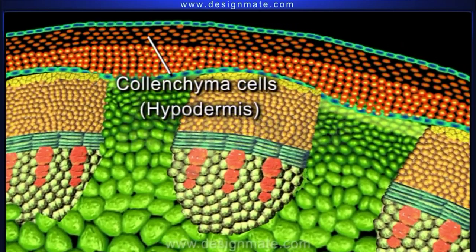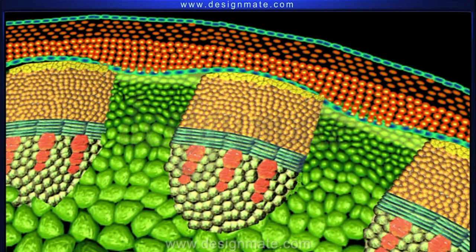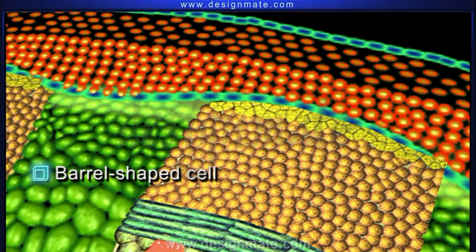Collenchyma cells are arranged in four to five layers forming the hypodermis. The thin-walled parenchymatous cells which constitute the general cortex lie inner to the hypodermis. A few barrel-shaped cells are arranged in a single layer to form the endodermis.